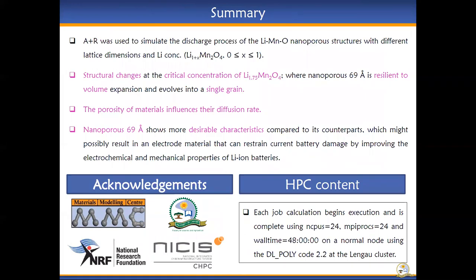In summary, the amorphization and recrystallization technique was used to simulate the discharge process of the Li 1.00 Mn2 nanoporous structures with different lattice dimensions and concentrations. Structural changes at the critical concentrations of Li 1.75, where nanoporous 67 is resilient to volume expansion and evolved into a single grain, was observed. The porosity of materials was found to influence their diffusion rate.